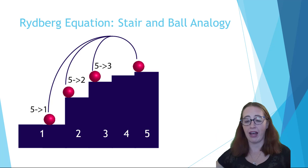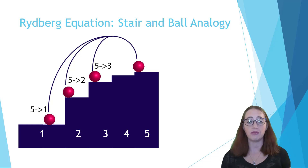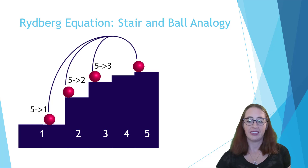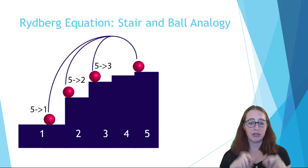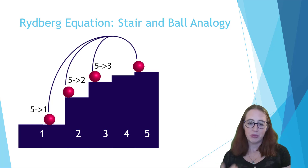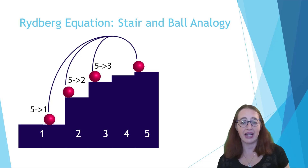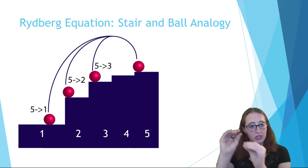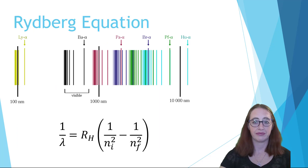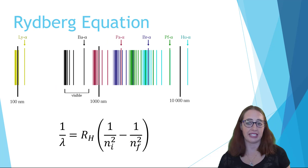A step between one and five is going to require more energy than a step between three and five—it's more work to go up four stairs than two, or four flights of stairs than two. Also notice this is a somewhat silly staircase: the steps get smaller as you go up. This simulates how the energy levels in a hydrogen atom get closer and closer together as you move up.